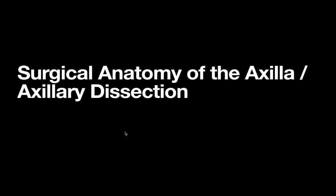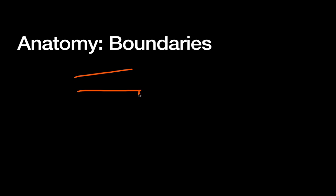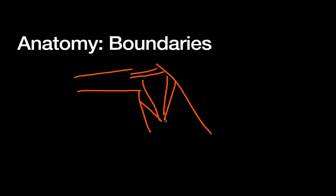As for the boundaries of the axilla, a lot of places define this as a somewhat pyramid-shaped structure where the base is the skin of your armpit and the point is roughly where your upper arm meets the chest wall. The key boundaries I've found are the axillary vein, the latissimus dorsi posteriorly, the pec major and minor superior-anteriorly, and then deep to all that, the chest wall made up of the ribs and the serratus anterior.